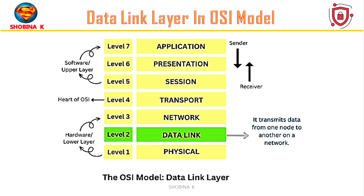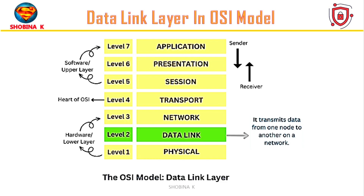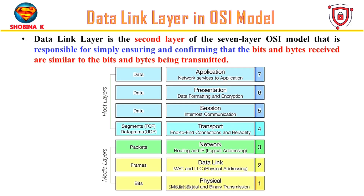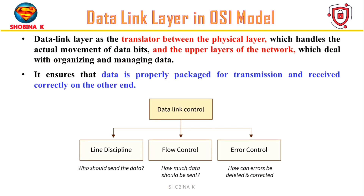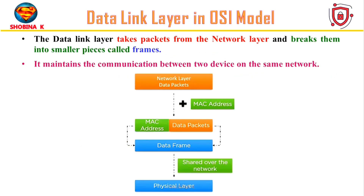First, what is the data link layer? The data link layer serves as a bridge or translator between the physical layer and the network layer. The physical layer deals with transmission of raw data bits over the network medium, whereas the network layer handles tasks such as addressing, routing and data formatting. The data link layer is the second layer in the OSI model and acts as a traffic controller for data on a network. It is responsible for taking packets from the network layer and breaking them down into smaller, more manageable units called frames.